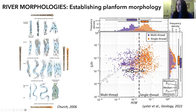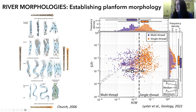I played around with moving the line, and what we realized is that all we needed to do was put a straight line through the data. Looking at the distribution, just the aspect ratio alone is probably the best discriminator of what the river planform is.